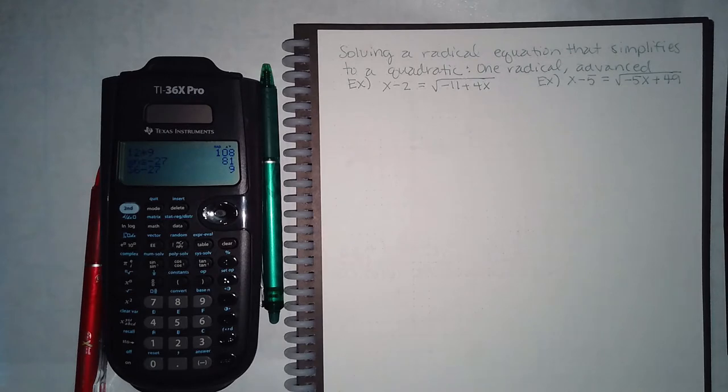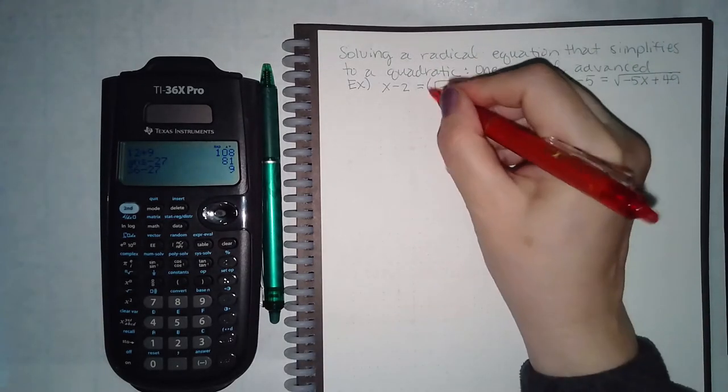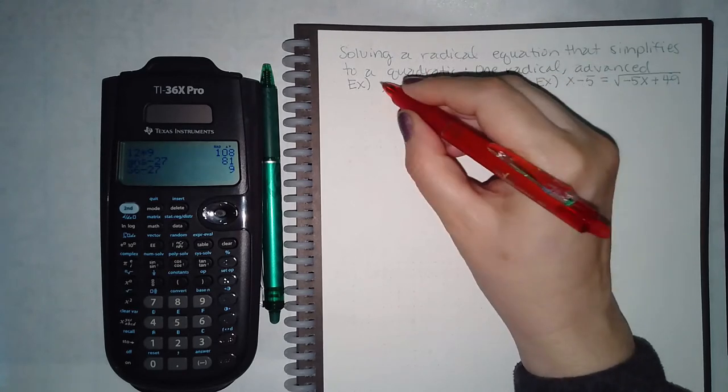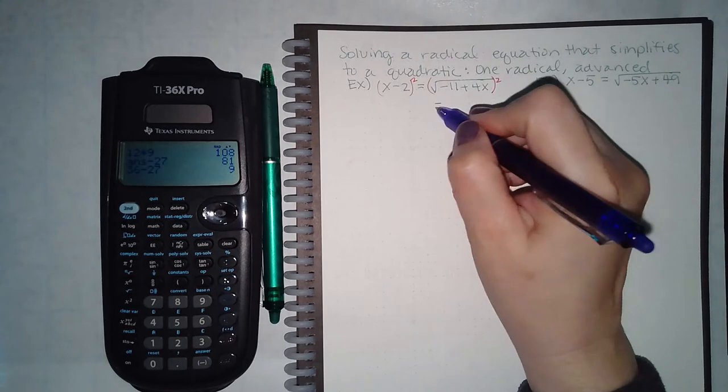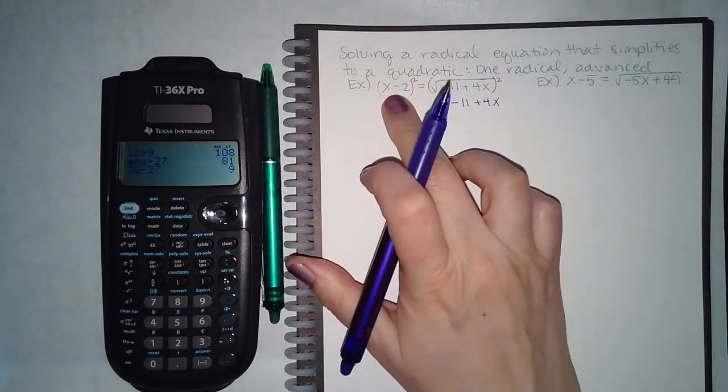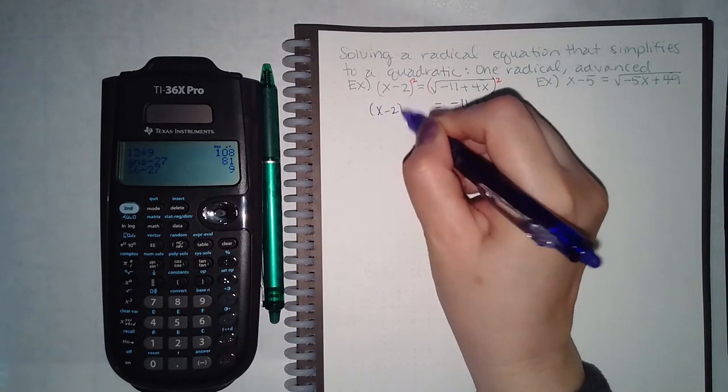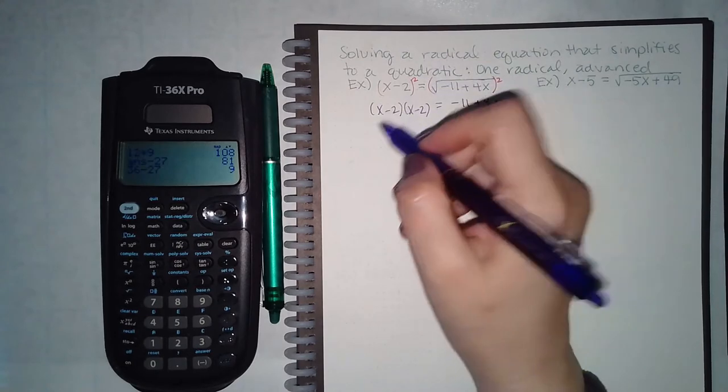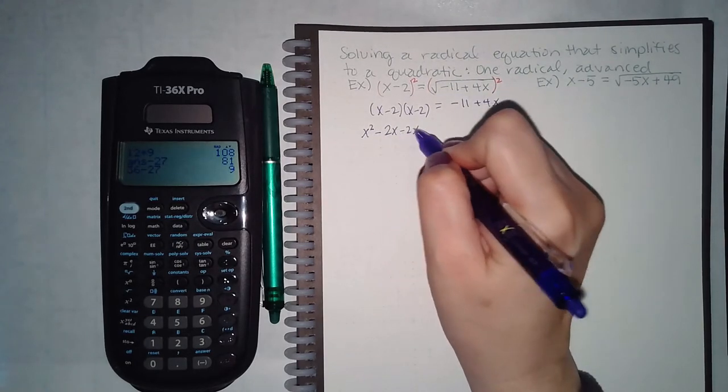Okay, we're going to continue the same idea. So the radical is isolated here, so I can square both sides. On the right hand side the radical just goes away, but on the left hand side you have a binomial squared, which actually means you have that binomial times itself, so actually have to FOIL this part out before you can continue.